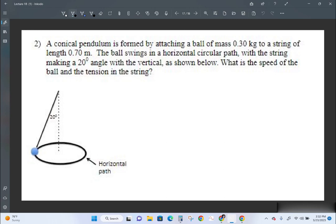We have a conical pendulum now that has a mass of 0.3 and a length of 0.7, and it makes a 20 with a vertical.